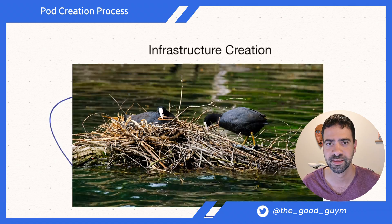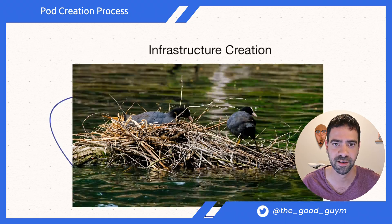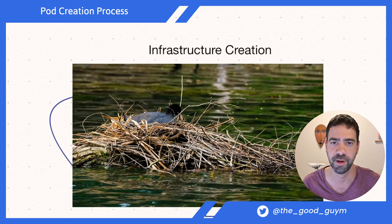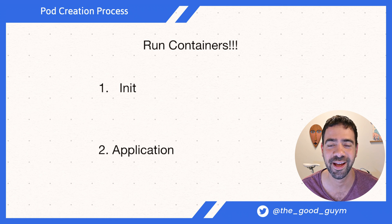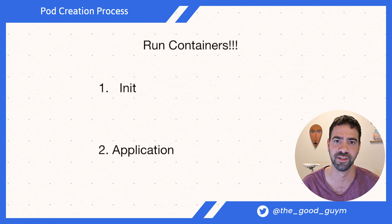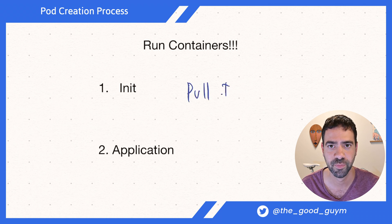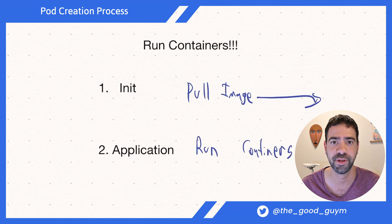It's like birds actually building the nest — they collect pieces of wood and build the nest before putting the eggs inside. After we get the node to run on and the infrastructure is set up, we can start running the containers. Kubelet will pull the images for the init containers and run them, and only after that will it pull the images for the application containers and run them as well.